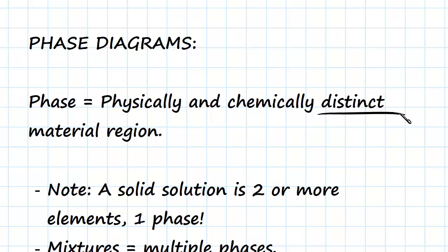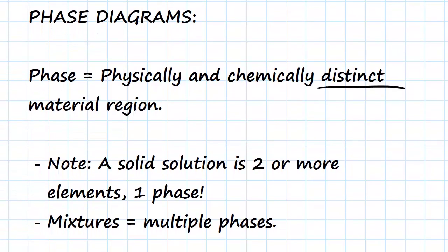It's important to note here we've talked a lot about solid solutions. If you create a solution with two or more elements, that could be substitutional interstitial atoms that have been added to add strength or other characteristics.